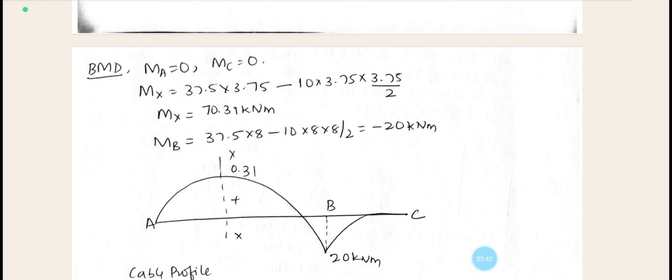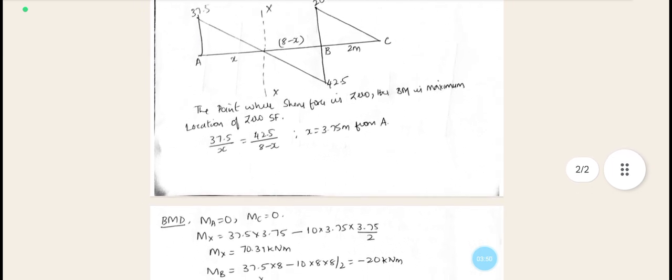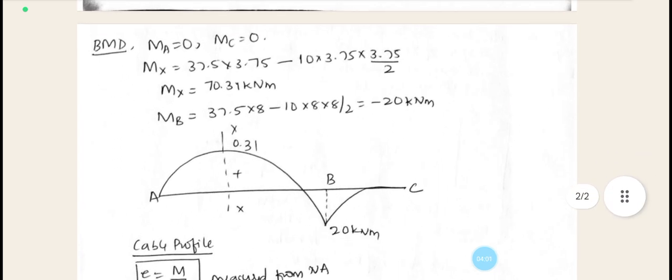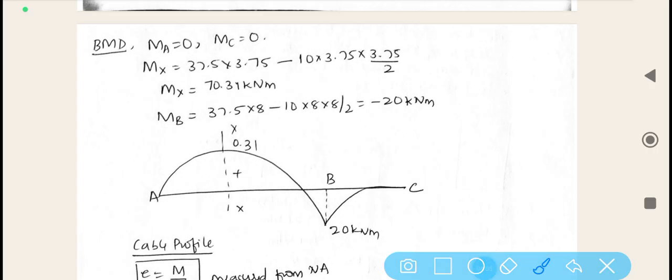Let us find out what is the bending moment at X. 37.5 into 3.75, so this sketch into 3.75, it has been founded, minus 10 is nothing but the loading into 3.75 into 3.75 divided by 2. After simplifications and calculations, we get MX is equal to 70.31, and finally bending moment at point B can be obtained as 37.5 into 8 minus 10 into 8 into 8 divided by 2. Finally, it is minus 20.